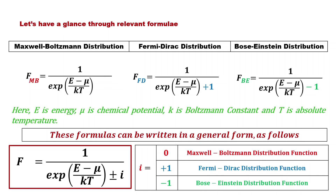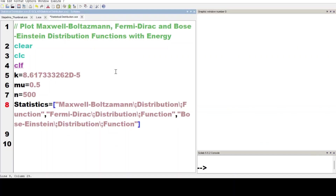Let's have a program. Here we already have some parameters defined: k is the Boltzmann constant in electron volt per Kelvin, mu is the chemical potential with value assigned 0.5, n is equal to 500, which is the number of points in the energy range. Another variable 'statistics' stores the names of the distribution functions in the form of a string.